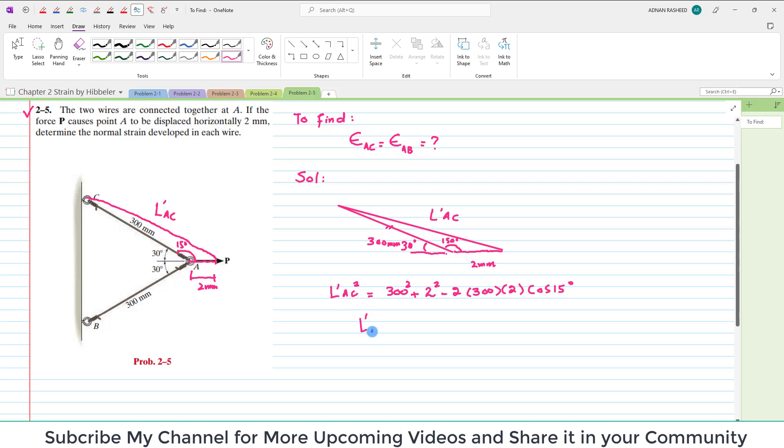So it means new length of this A C will be equal to square root of 300 square plus 2 square minus 2 times 300 into 2 into cos of angle between them. So this is 150 degrees. Clear.